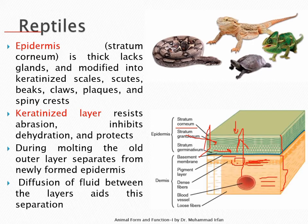There are no glands in the reptilian epidermis. The loose fibers of the connective tissue have gaps between them. During molting, the old outer layers separate from the newly formed epidermis, and diffusion of fluid between the layers aids this process.